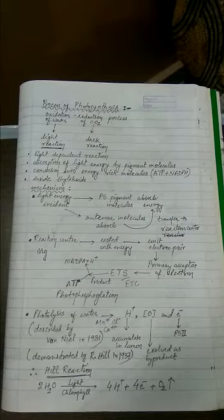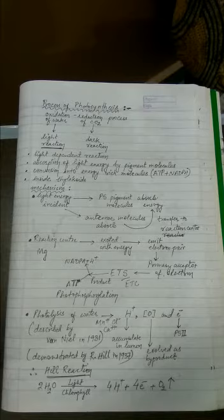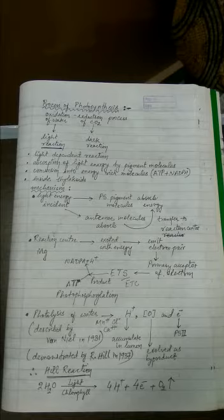Photosystems are also called as quantosomes. Then transfer of this energy to the reaction center occurs and finally the reaction center undergoes photoexcitation and liberates or emits a pair of electrons.